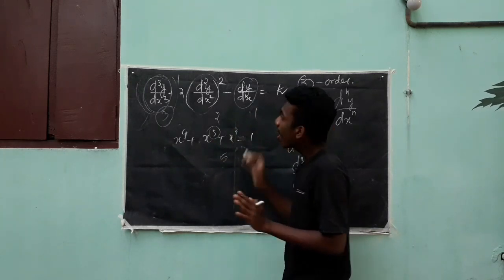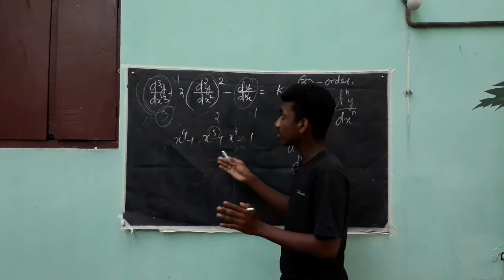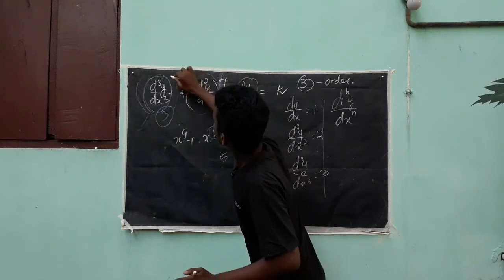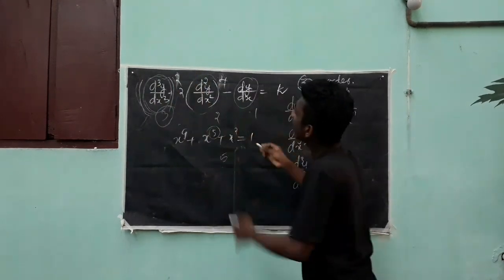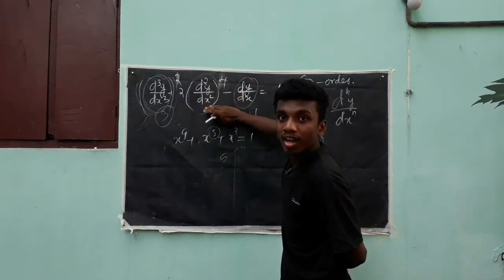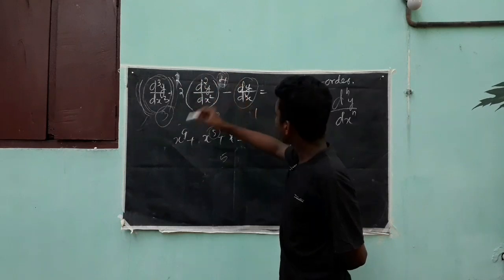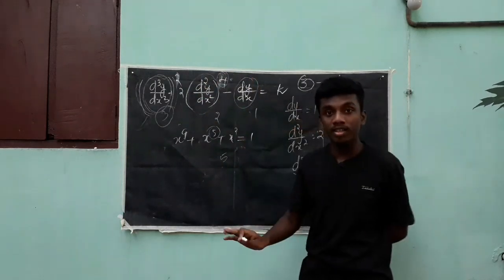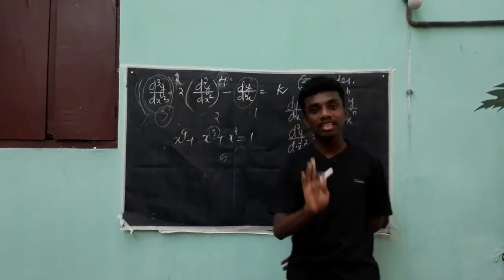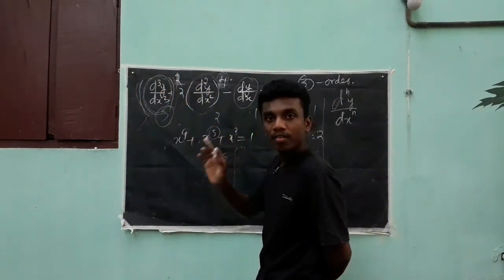Now let's discuss degree. The highest order derivative term must be a polynomial — not inside a trigonometric, logarithmic, or exponential function. The degree is the highest power of the highest order derivative term in the equation. For example, if d²y/dx² has a whole square, then its power is 2, so the degree would be 2.